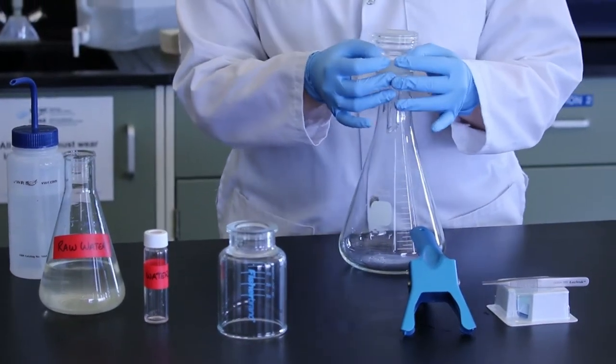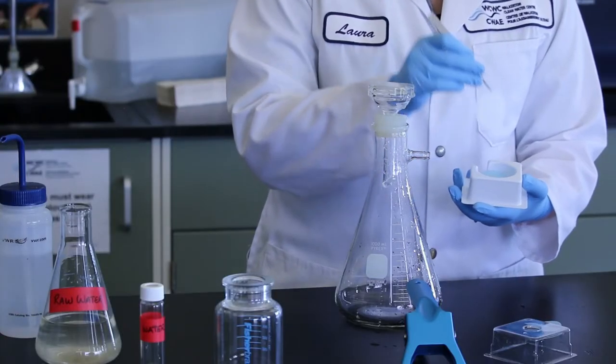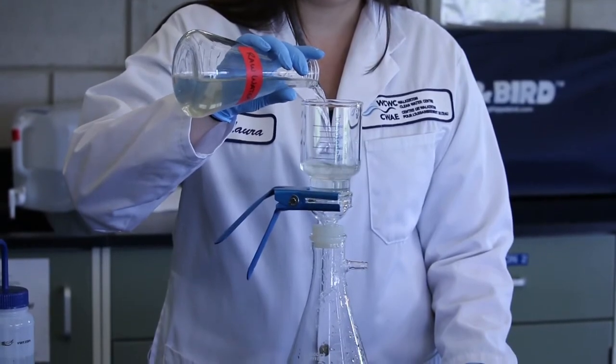A grab sample is collected and filtered using a 0.45 micron filter paper. This is to remove the particulate organic carbon from the dissolved portion.